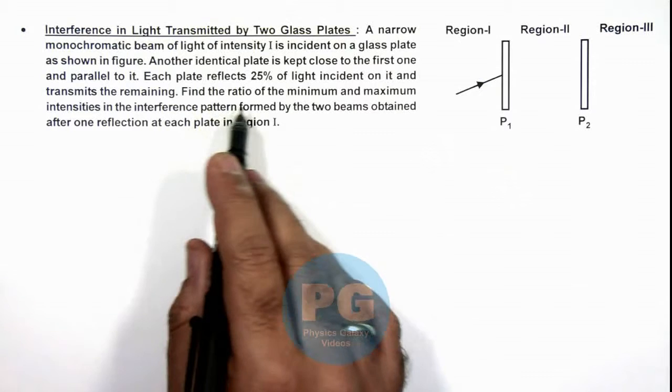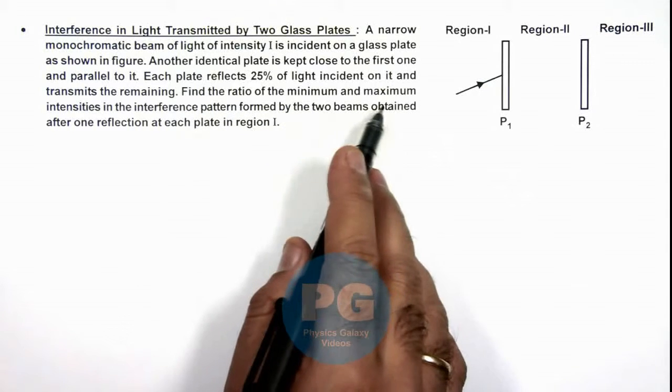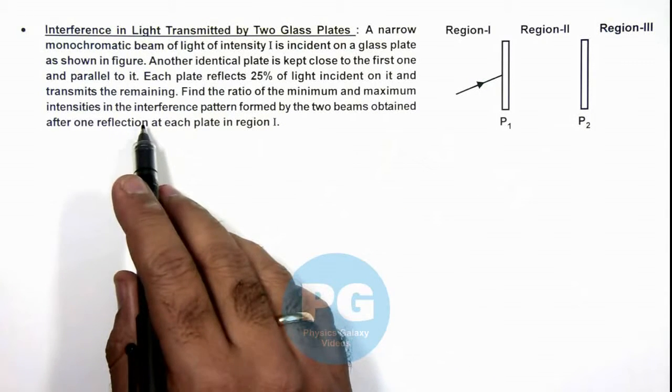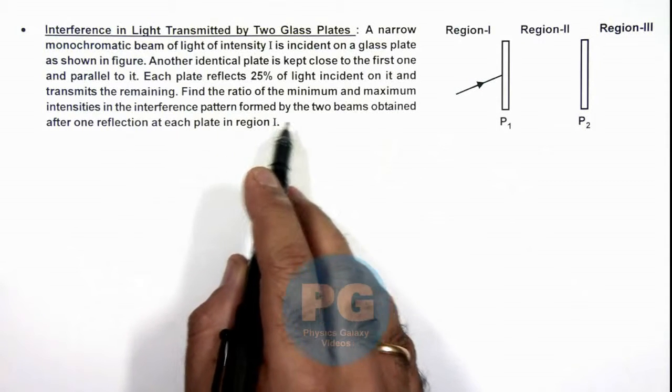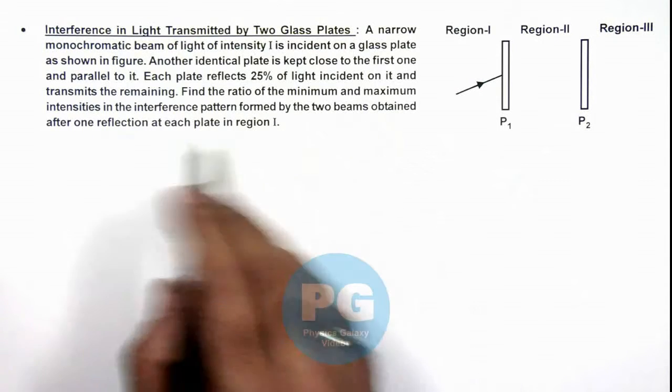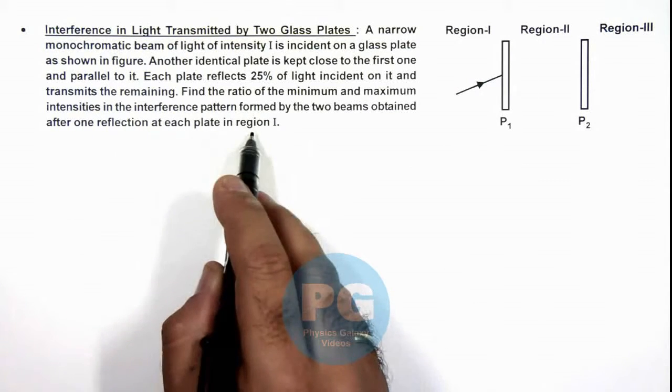We are required to find the ratio of minimum and maximum intensities in the interference pattern formed by the two beams obtained after one reflection at each plate in region 1.